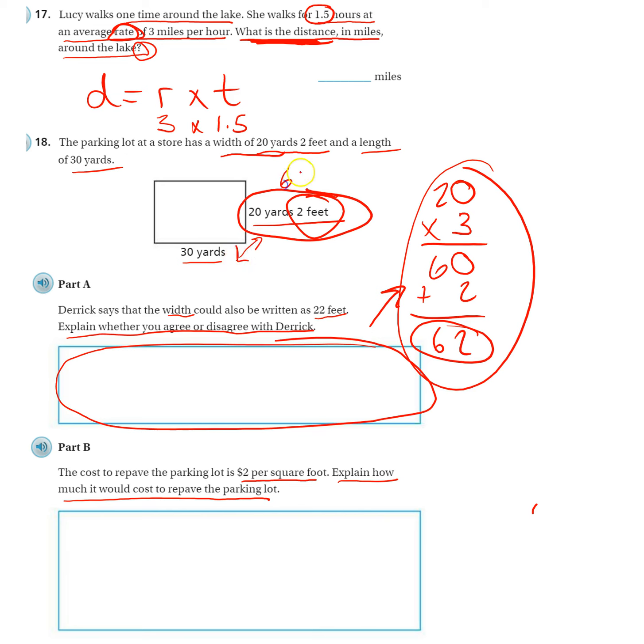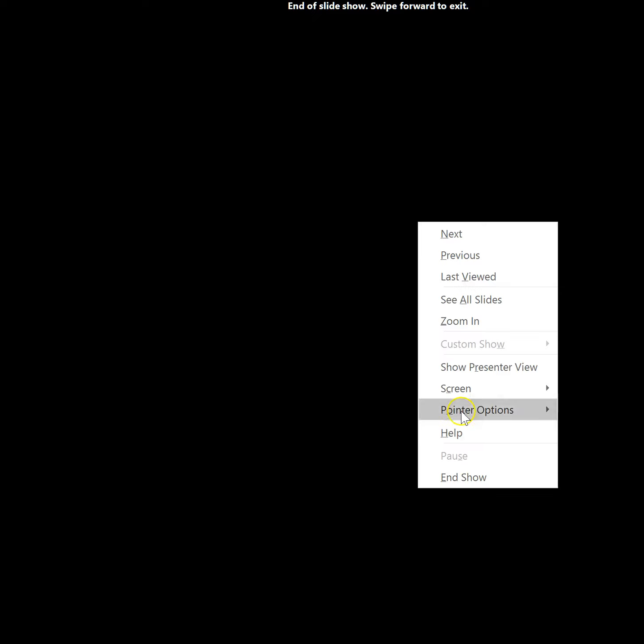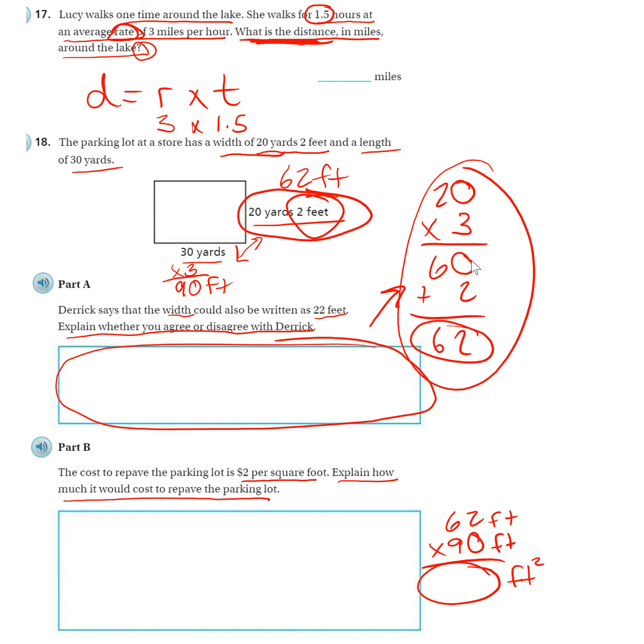Well, we already changed the width to feet. It's 62 feet. Now, we multiply the length by 3 to get it in feet. And now that we have both of these in feet, we just have to multiply 62 times 90. That's going to give us our feet squared, because this is feet times feet. And feet times feet just is feet squared, feet times itself.